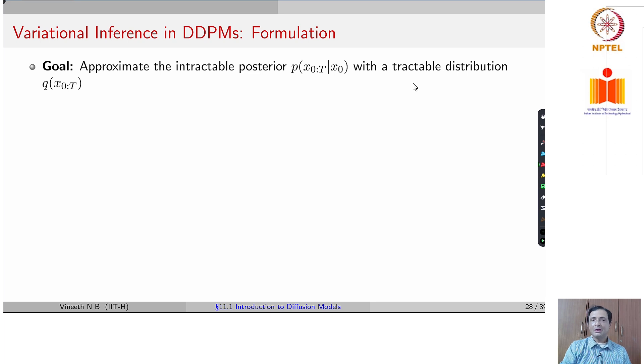The way that comes into effect in DDPMs is through the use of variational inference in the formulation and how we actually end up implementing the loss function itself.